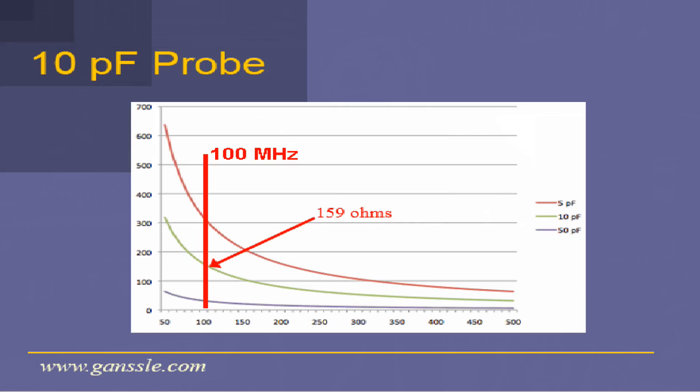Here's another typical probe — this one is 10 picofarads. It's very common to find 10 picofarad probes in our labs, and this is about a $300 probe — still not something you're going to get at Radio Shack. We can see from this graph that at 100 megahertz, which isn't very fast by today's standards, this probe has an impedance of 159 ohms. It's like putting a 159 ohm resistor across your node.